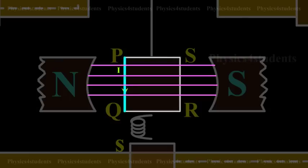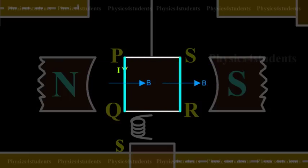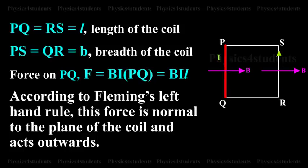The sides PQ and RS are always perpendicular to the field. PQ equals RS equals L, length of the coil, and PS equals QR equals B, breadth of the coil.